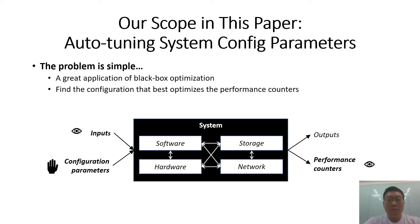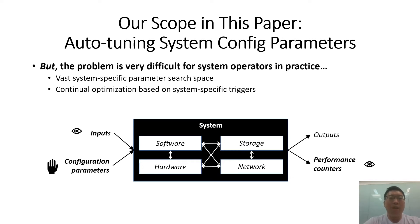The problem of auto-tuning parameters is simple in some sense — you can imagine it as a black-box optimization. You simply view the system as a black box and adjust configuration parameters with respect to the performance counters you observe, eventually optimizing those counters. But for a simple problem like this, it's actually very difficult for system operators in practice. First, the configuration space can be vast, with system-specific parameter constraints and dependencies such as value type and range.